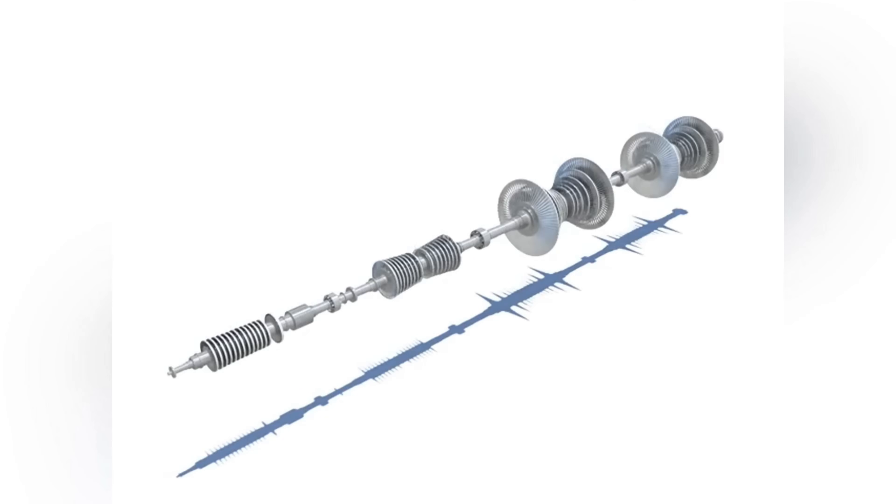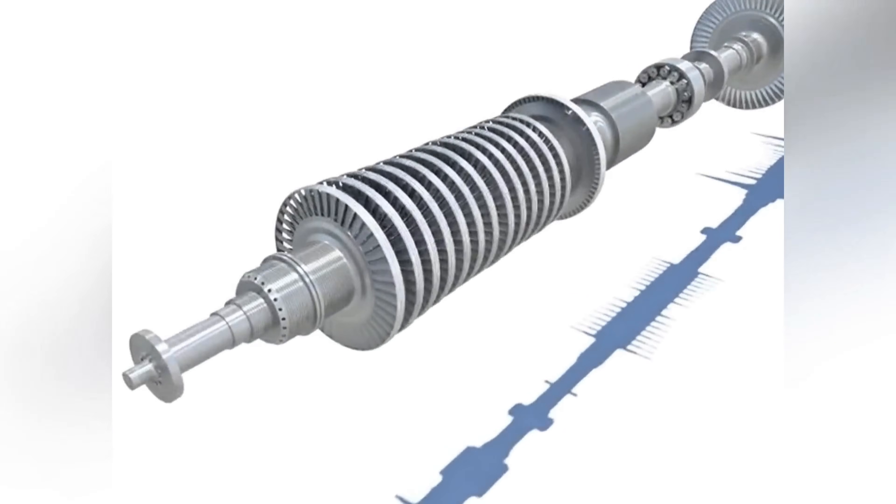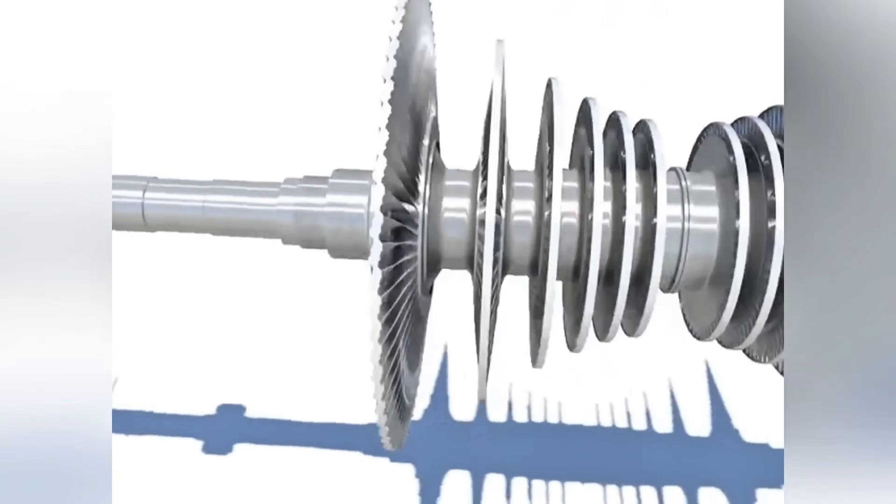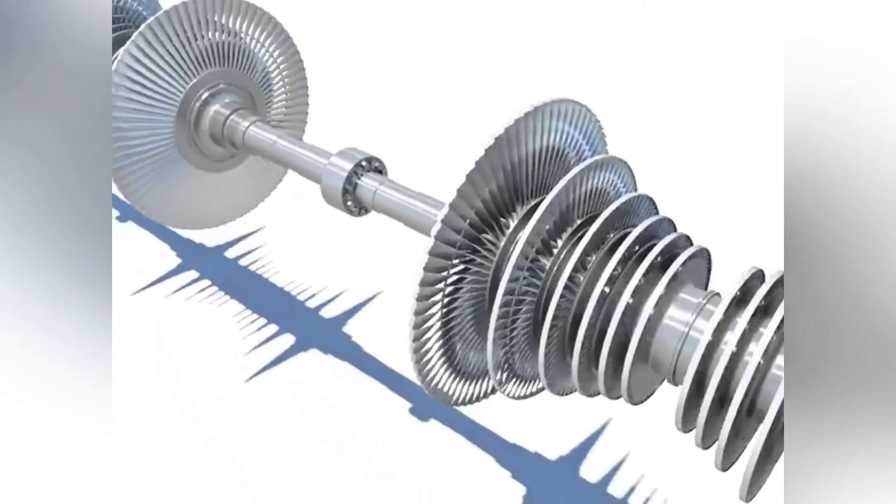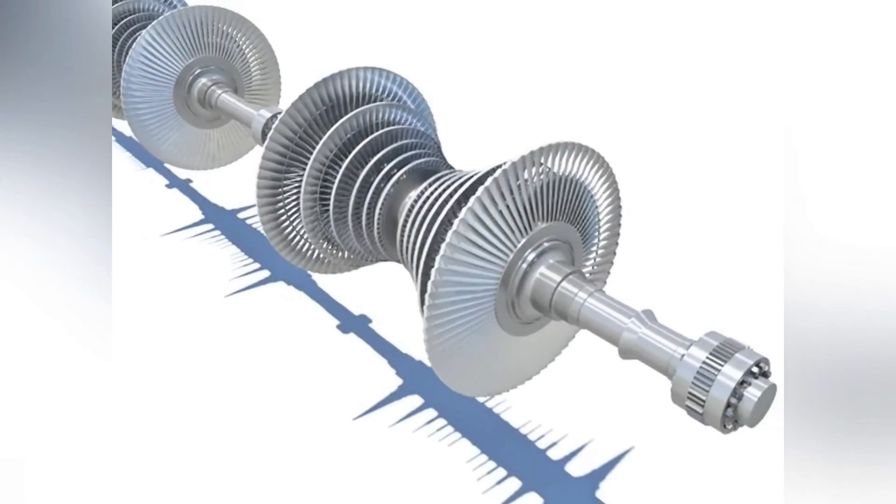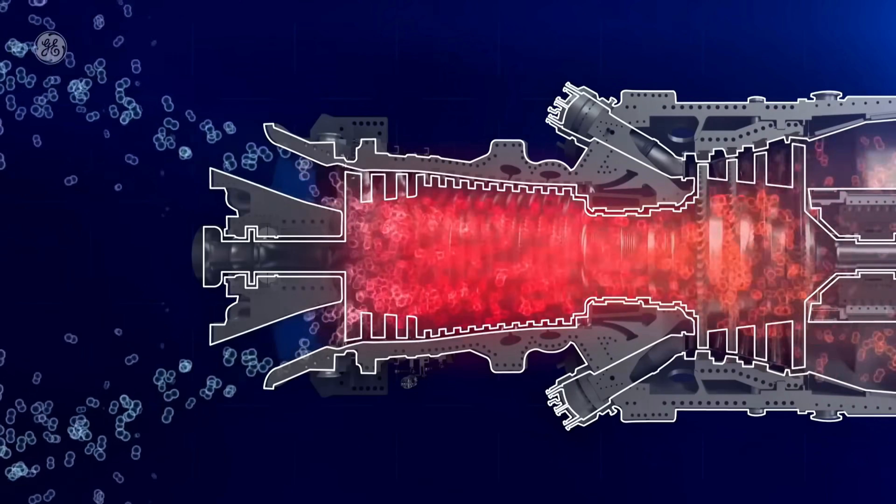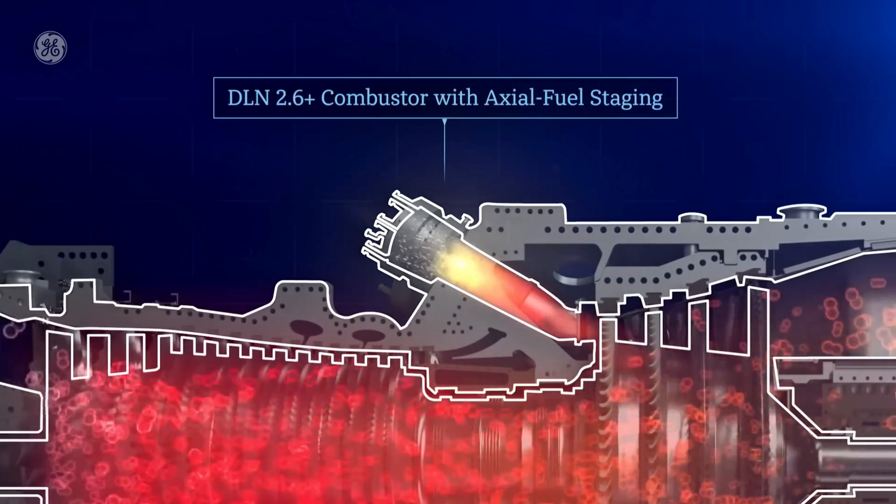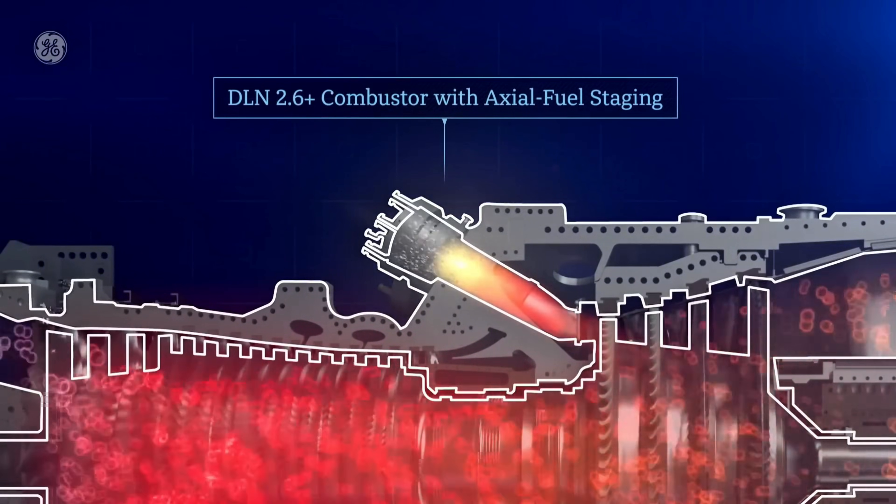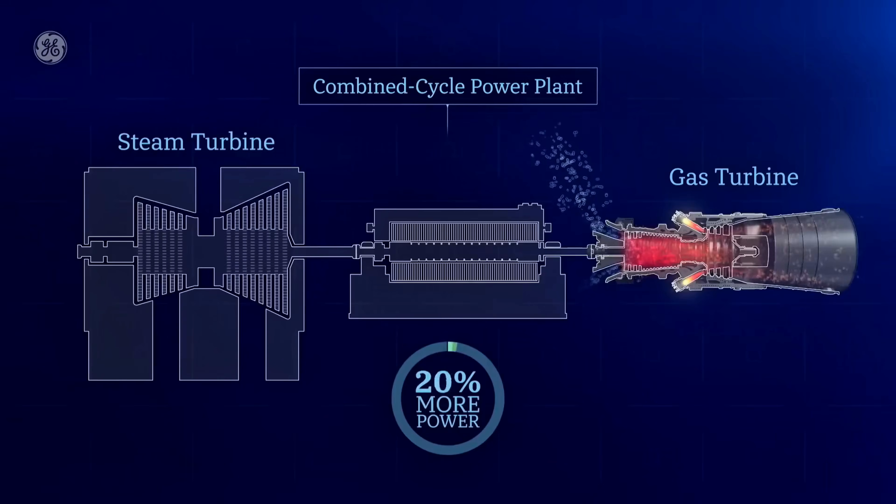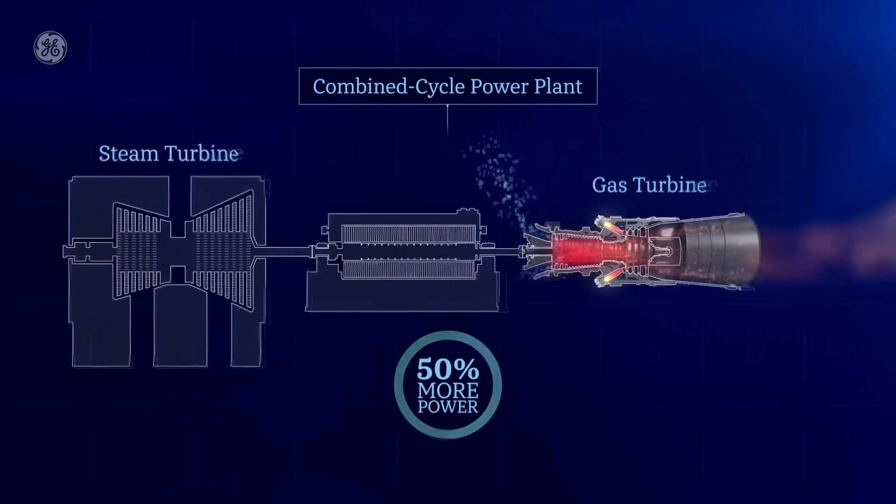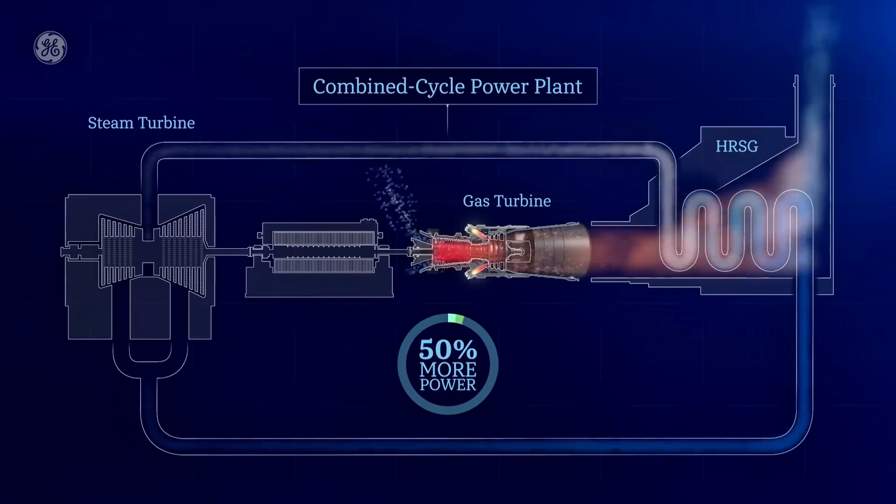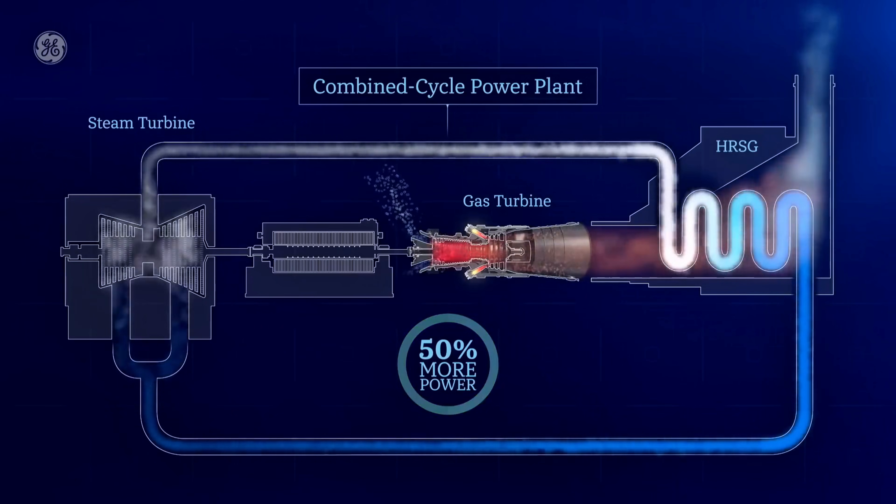The efficiency gains are equally striking. Because of the high temperatures and the heat recovery, SCO2 cycles can reach thermal efficiencies around 50% or higher. By contrast, today's best coal or nuclear plants manage only about 30 to 40%. Pushing from, say, 35% up to 50% means almost 50% more electricity from the same fuel input.